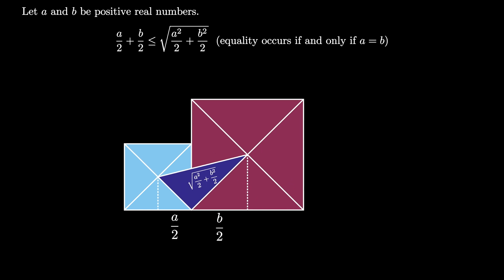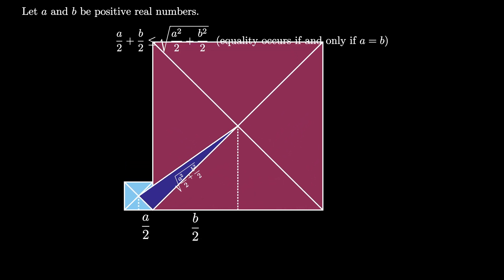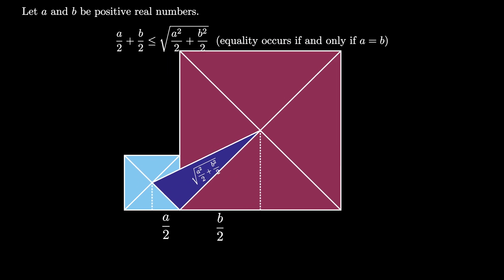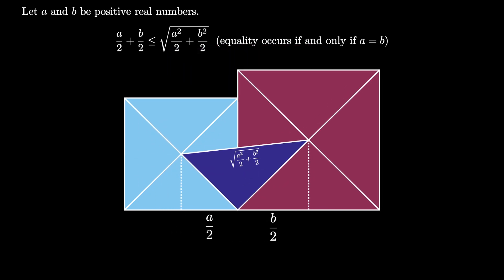Therefore A over 2 plus B over 2 is less than or equal to the square root of A squared over 2 plus B squared over 2 and equality occurs if and only if A equals B.